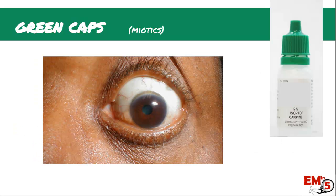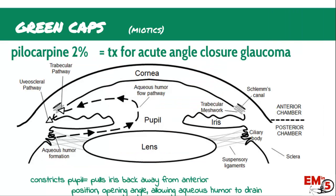Now let's talk about the miotics — these are the green caps. There's really only one use we'll see in the ER, and that's treatment for acute angle closure glaucoma. Your main one here is pilocarpine 2%. As a quick review: it's going to constrict the pupil, the iris is going to pull over into the center, and that's going to open up the angle at Schlemm's canal and allow the aqueous humor to drain.